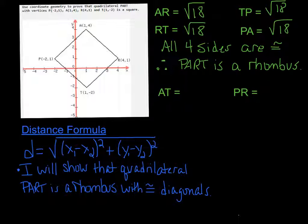Our ultimate goal here is to prove that we have a square, and we're only just finding out right here whether the lengths are the same. From the radical 18s, I can see that all four sides are congruent. Therefore, PART is a rhombus.